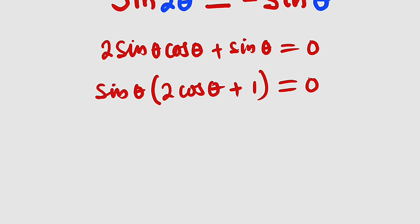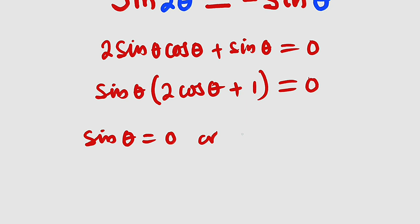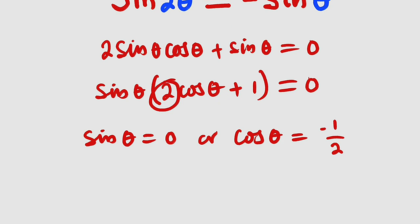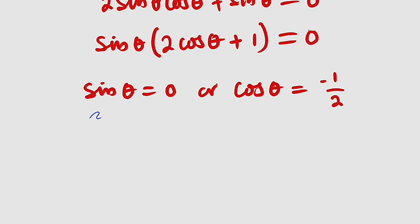We have two factors multiplying each other with result zero, so either sine θ equals zero, or we take 1 to the other side and divide by 2, giving cos θ equals negative one divided by two. These are the two equations we need to solve separately.